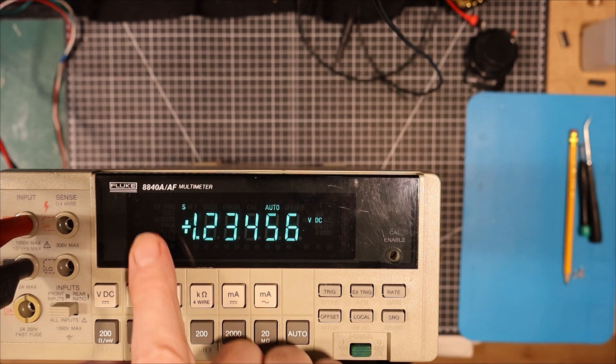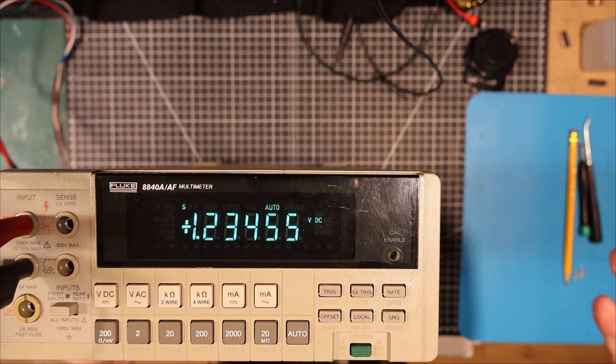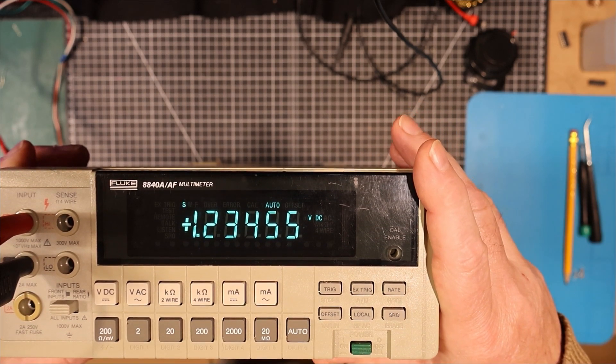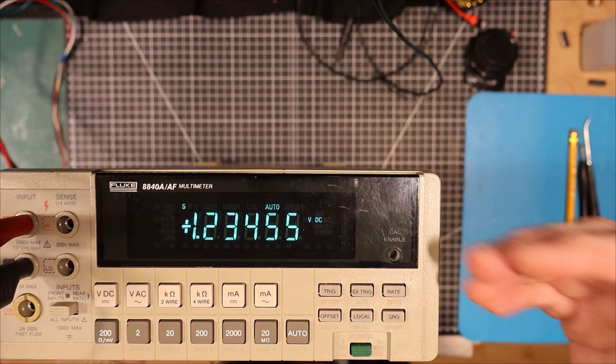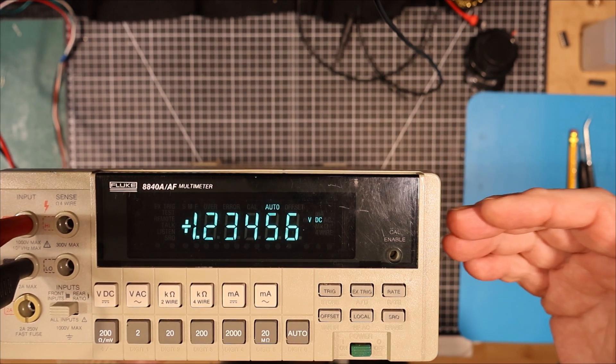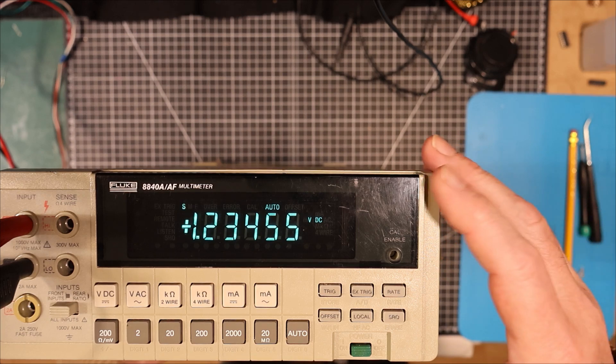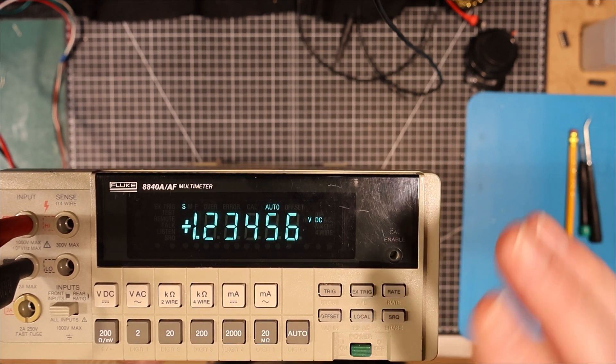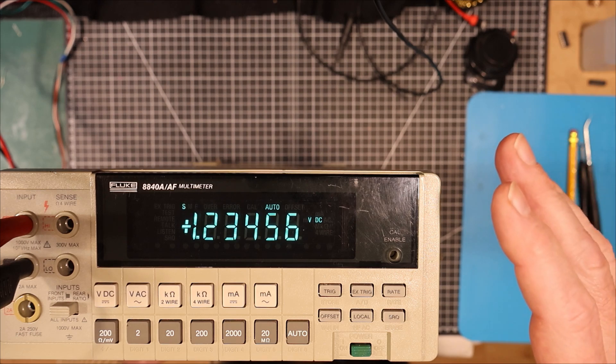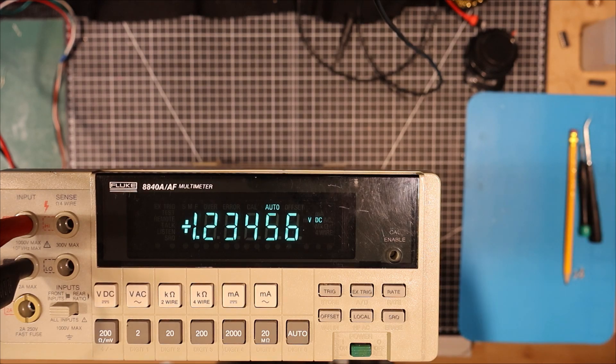And the next new thing is this Fluke 8840A slash AF multimeter. I picked up this Fluke just a little while ago for $100. When I think about that, this is a five and a half digit top professional level multimeter for a hundred bucks. Now I got it at that price because they showed me a picture of the display was terrible. It looked really dim and I thought I'd have to replace it. So I talked them down from their asking price and got it for a hundred bucks.